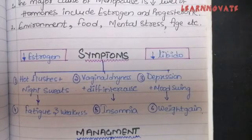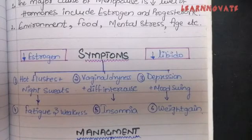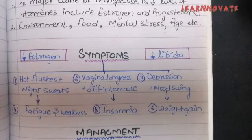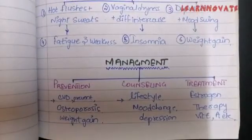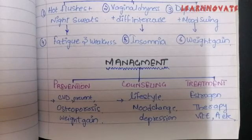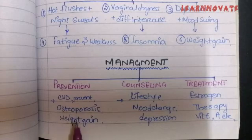Now, how to manage menopause? Remember, menopause is not a disease — it is a natural process occurring in all women at 45 to 50 years of age, so it is not treated, it is managed. We have three areas: prevention, counseling, and treatment. Through prevention, we can prevent certain diseases related to menopause and low estrogen, including cardiovascular disease, osteoporosis, and weight gain.